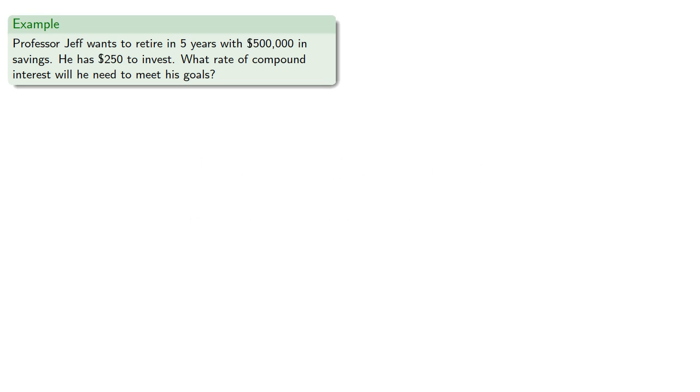So Professor Jeff wants to retire in five years with $500,000 in savings. He has $250 to invest. What rate of compound interest will he need to meet his goals? So he can invest C equals 250 for T equals five years and wants A, C, T to be $500,000.